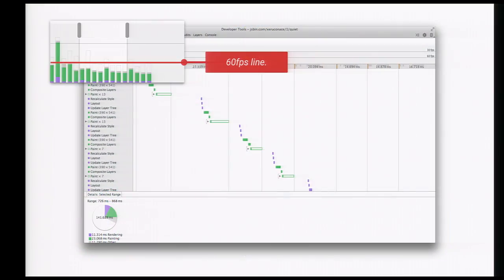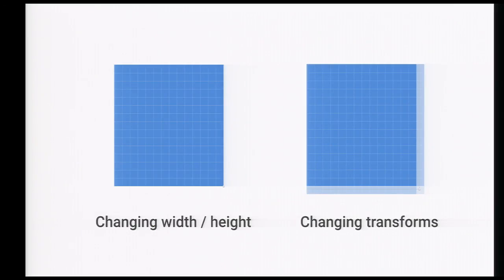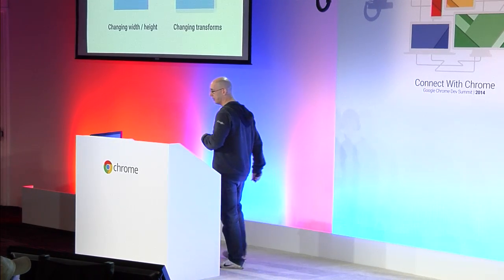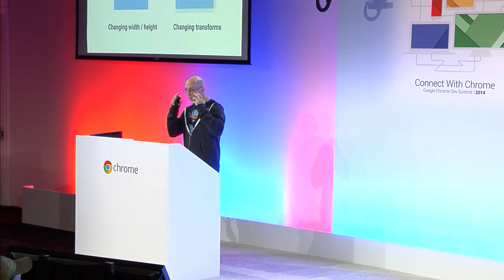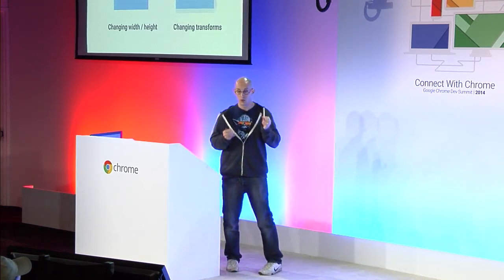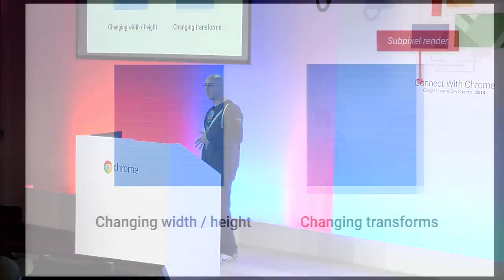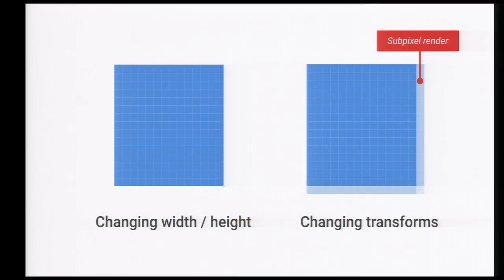We're pretty close to that frame budget. Here's the other problem: changing width and height puts you into pixel-rounded mode, which means that even if you're getting 60 frames a second, because things are moving per pixel, they actually look like they jitter a little bit. I think it's jarring — it actually looks like jank, even though it's actually doing pretty well. By comparison, you get sub-pixel rendering when you change a transform, which turns out to be quite useful for animations.